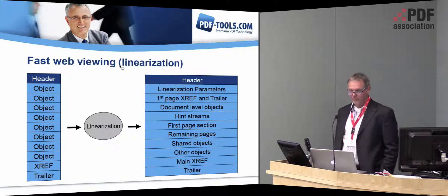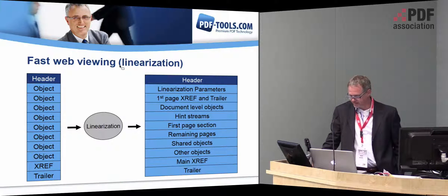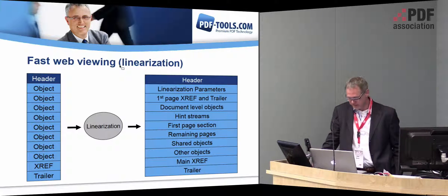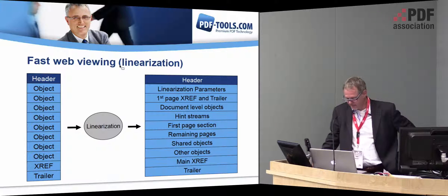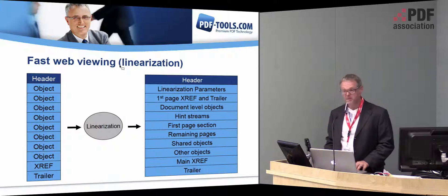Finally, there is fast web viewing. A linearized PDF file is a special format that makes viewing faster over the internet. Linearized PDF files contain information that allows a byte-streaming server to download the PDF one page at a time. Linearization adds information for fast web viewing and thus does not reduce file size — on the contrary, the PDF file will be increased by roughly 10% — and should only be used for document publication over the internet.